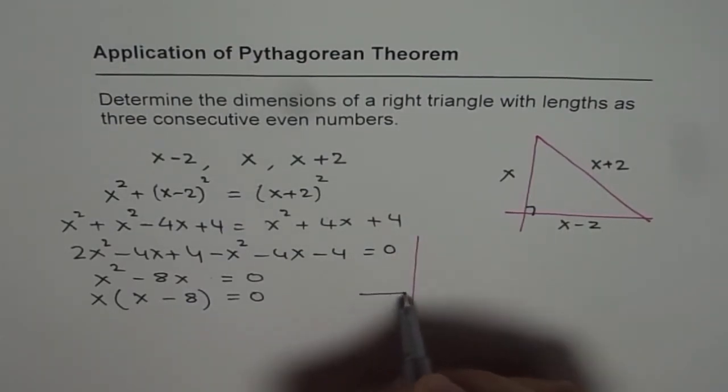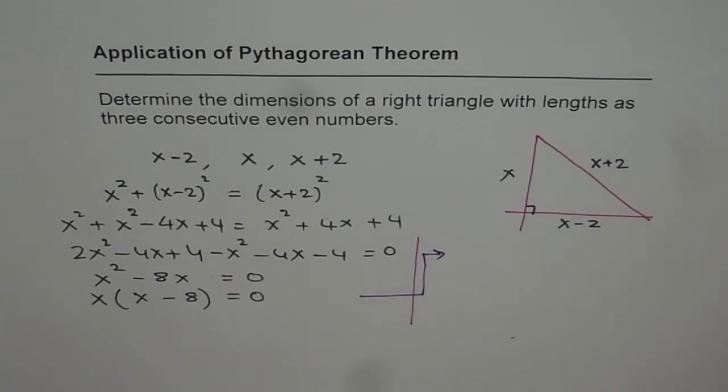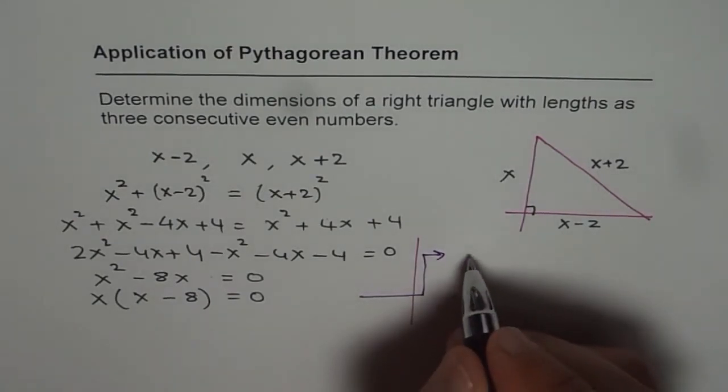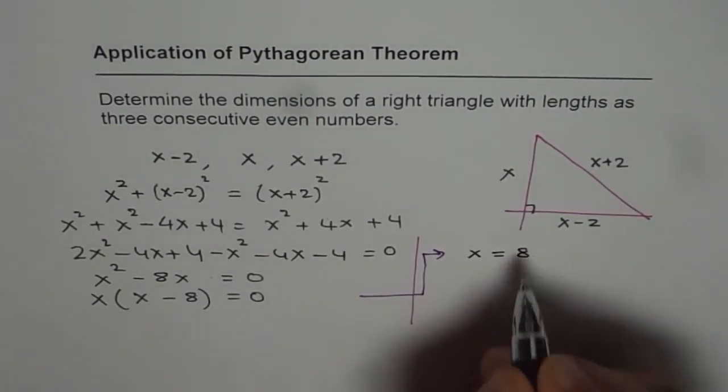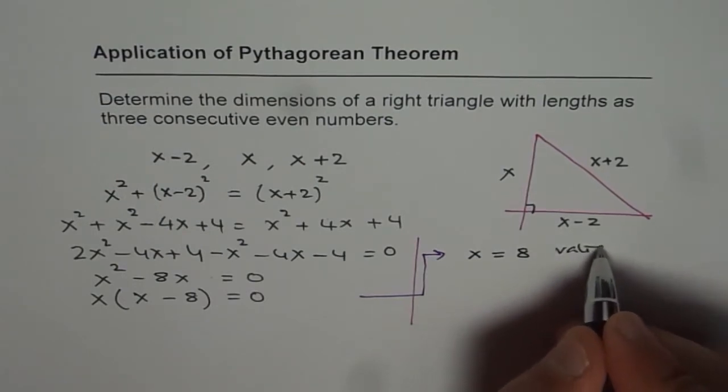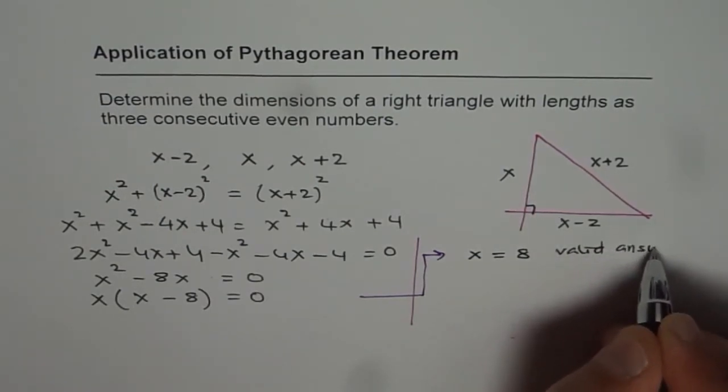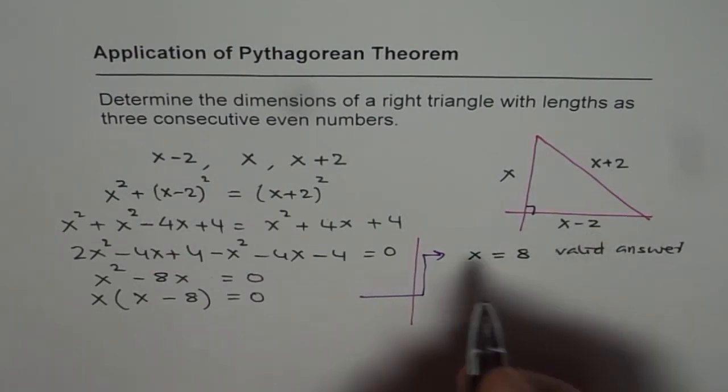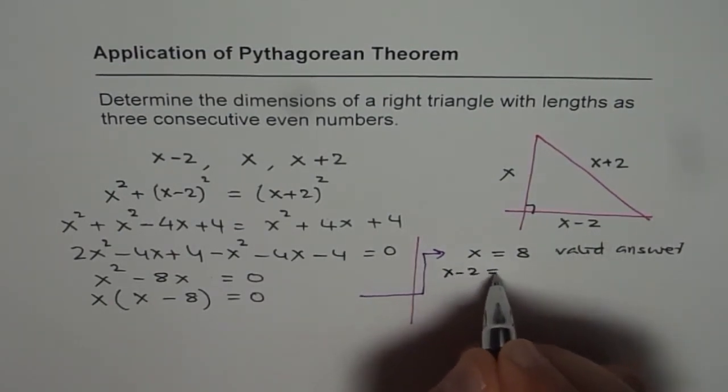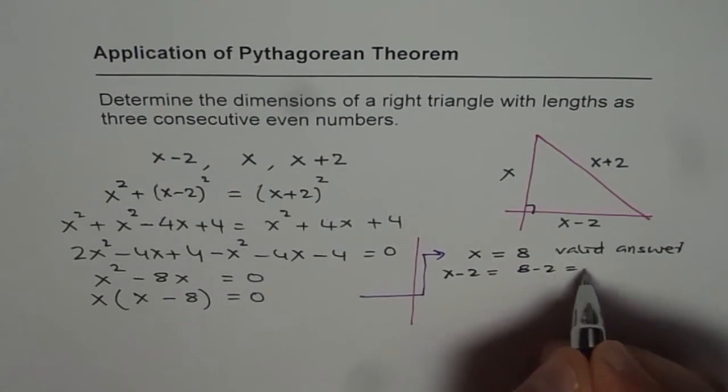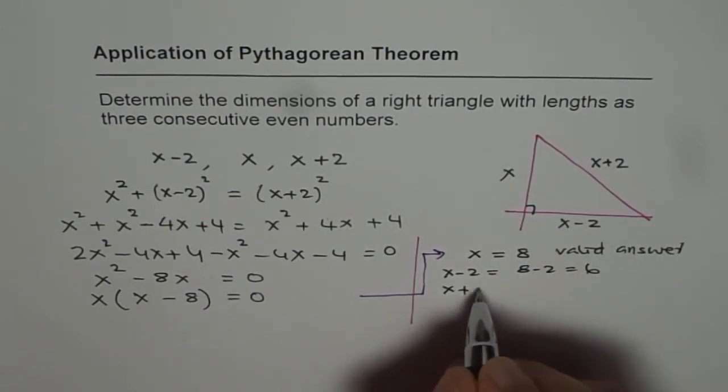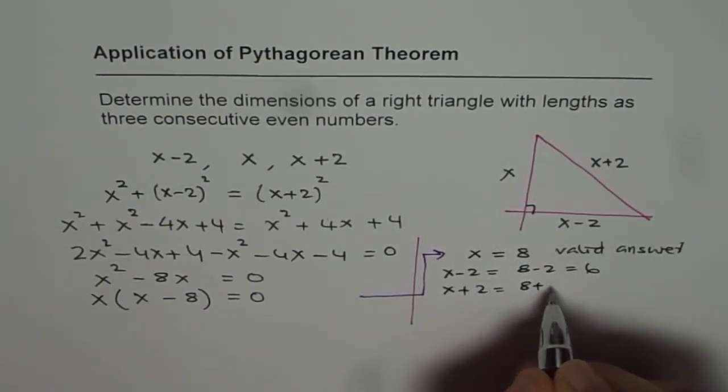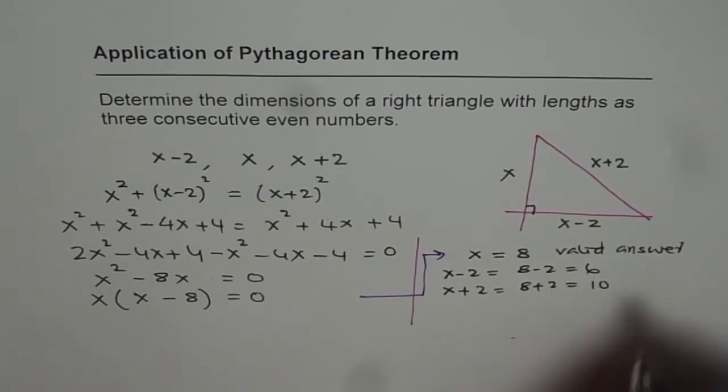So from here, let's take and solve this side. So what we get here is that x equals to 8 is valid answer. Now if x equals to 8, then the dimensions are x minus 2, which is 8 minus 2 equals to 6, and x plus 2, which is 8 plus 2 equals to 10.